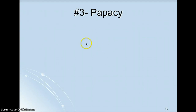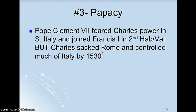The papacy is the third problem. Pope Clement VII feared Charles V's power in the southern part of Italy, so he joined Francis I in the second Habsburg-Valois conflict, which was 1527 to 1529.